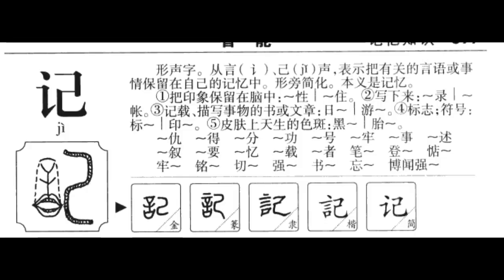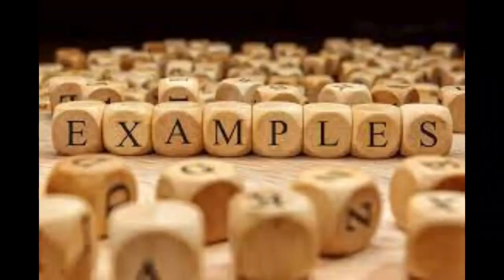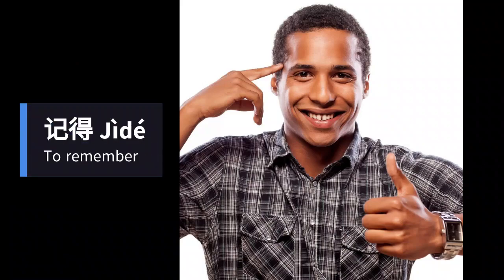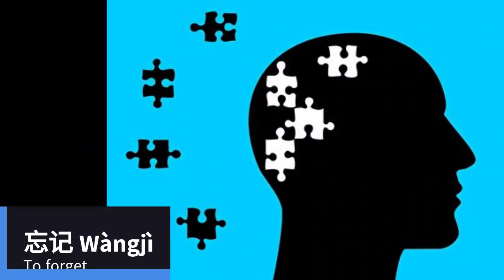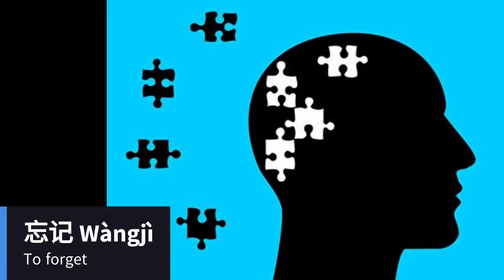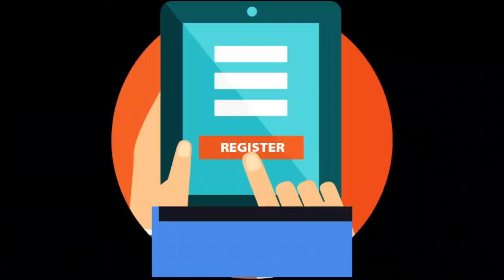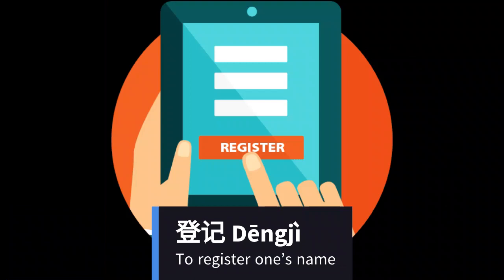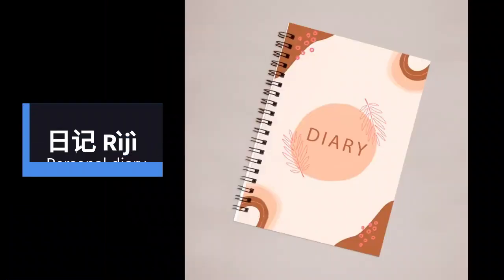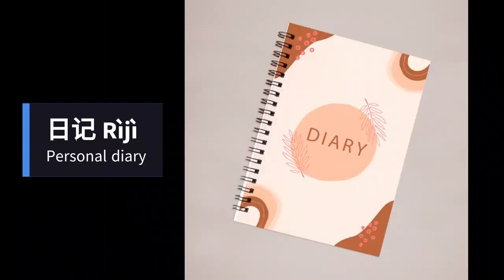Now let's see some examples. 记者 — reporter or journalist. 记得 — to remember. 忘记 — to forget. 登记 — to register one's name. 日记 — personal diary.